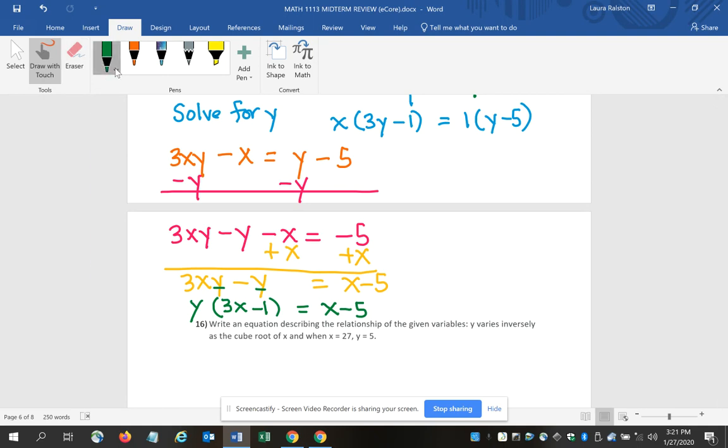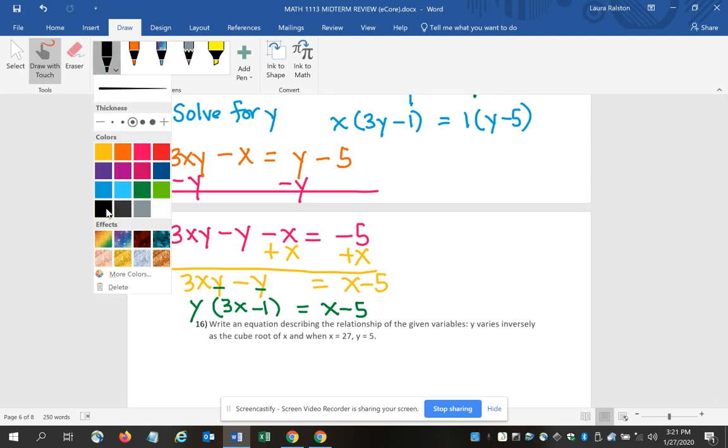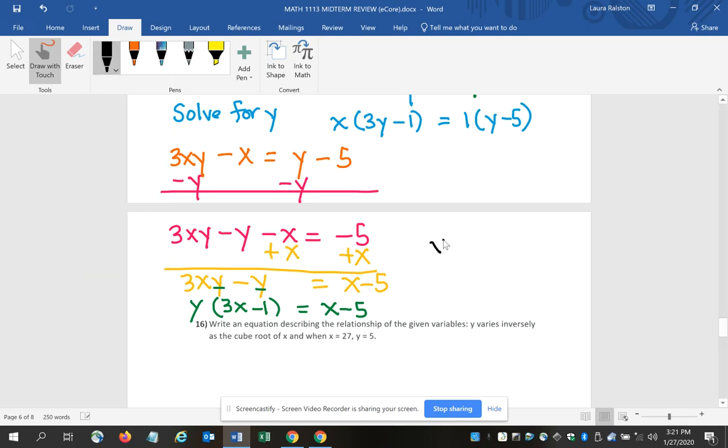Remember, I need to isolate the y, so I'm going to divide both sides by 3x minus 1. So I have y equals x minus 5 divided by 3x minus 1. And that's my answer because I finished the process. I've solved for y.